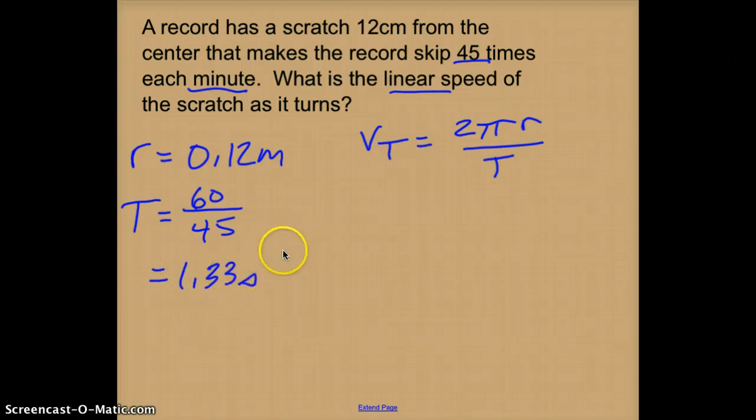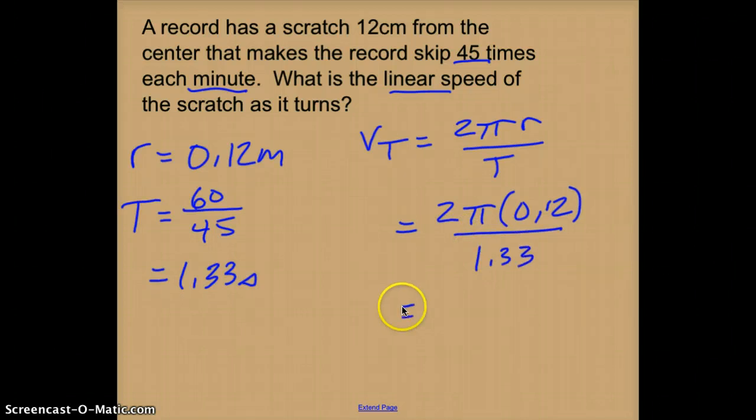That's how long it takes to go around once. So my tangent velocity is equal to 2π times 0.12 divided by 1.33. So my tangent velocity for this is 0.57 meters per second.